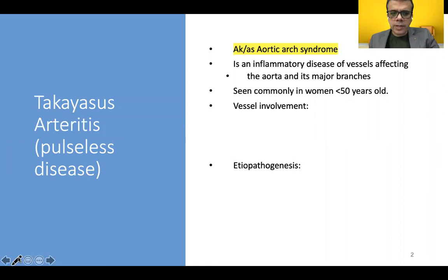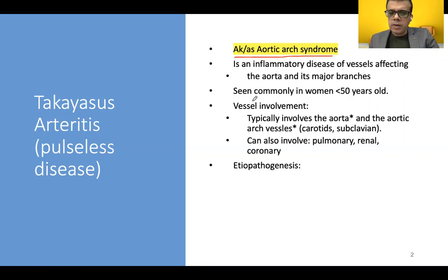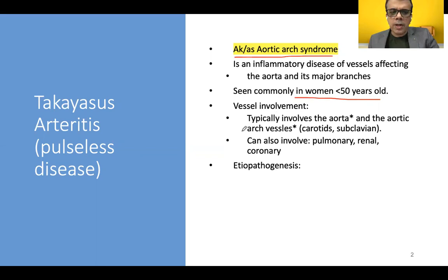Takayasu Arteritis, also known as pulseless disease, is an important clinical syndrome known as aortic arch syndrome because of the predominant involvement of the aorta, the aortic arch, and its major branches. It is seen very commonly in women less than 50 years of age. Cases occurring beyond 50 years of age would be classified as temporal arteritis rather than Takayasu Arteritis.